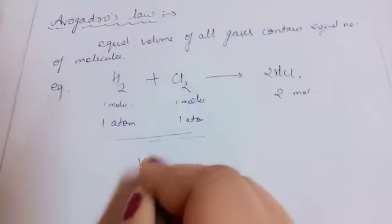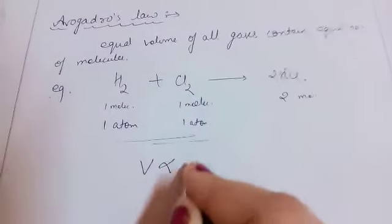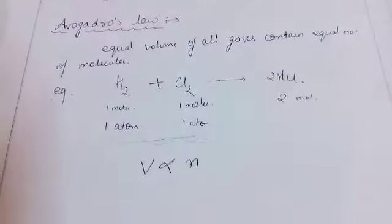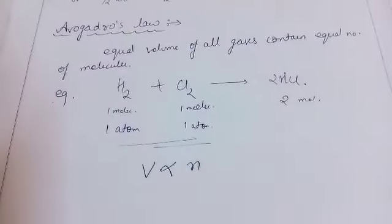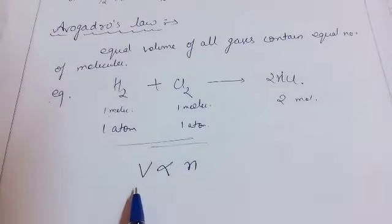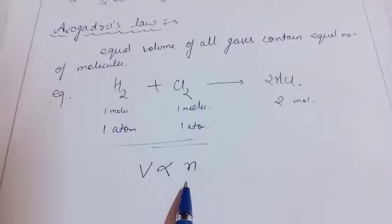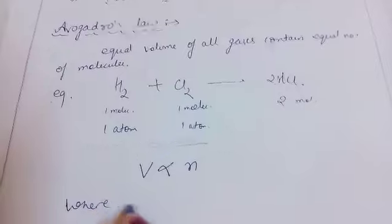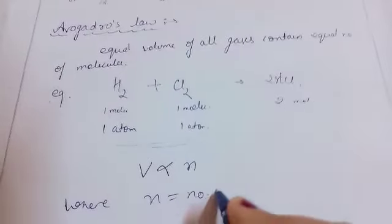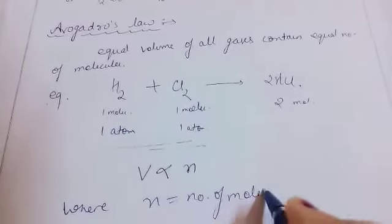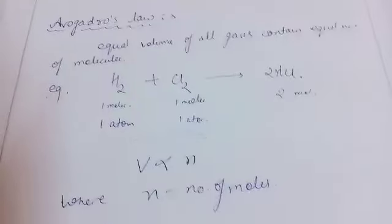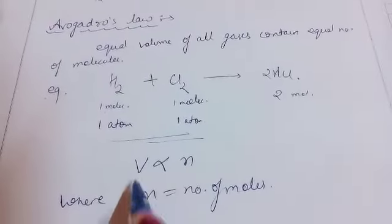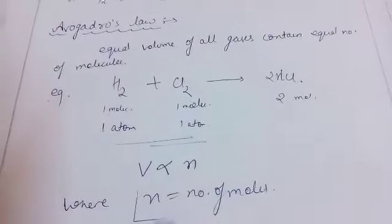An important formula from Avogadro's law: Volume is proportional to the number of molecules — equal volume of all gases contain equal number of molecules. Here N is equal to the number of moles, so whether you say number of molecules or number of moles, it is the same thing. This formula is very important and required for numericals. Thank you.